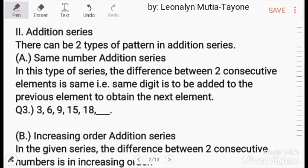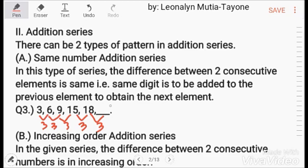There can be two types of pattern in addition series. First: same number addition series. In this type, the difference between two consecutive elements is the same — the same digit is added to the previous element to obtain the next element. In this example, the difference is 3. So from 9 to 15, we add 3 each time. So 18 plus 3 equals 21 — 21 is the answer.